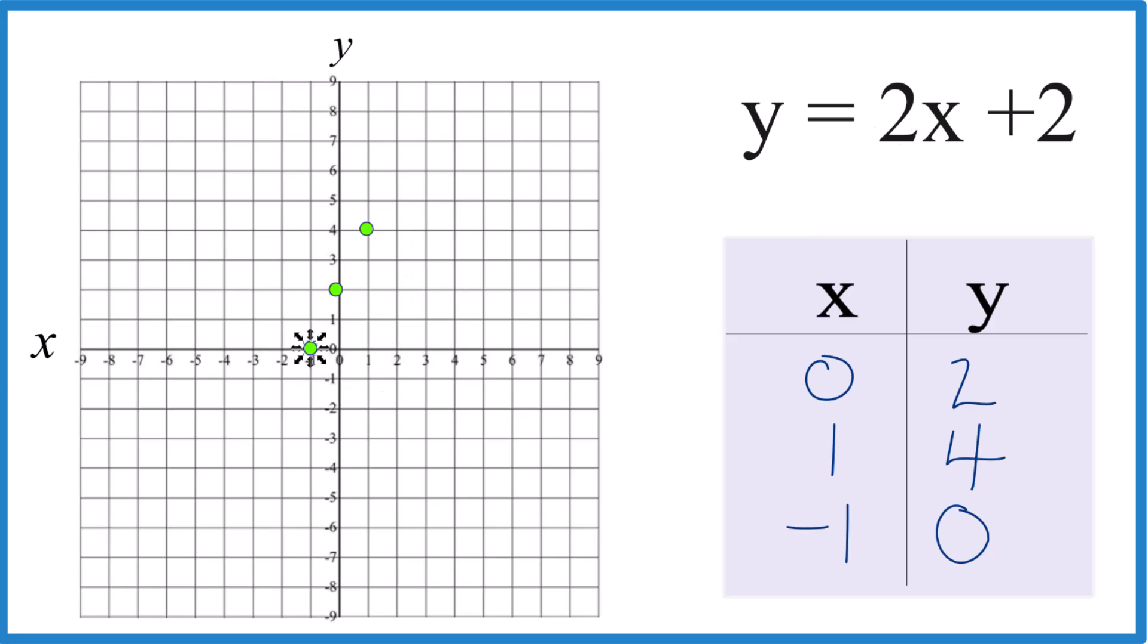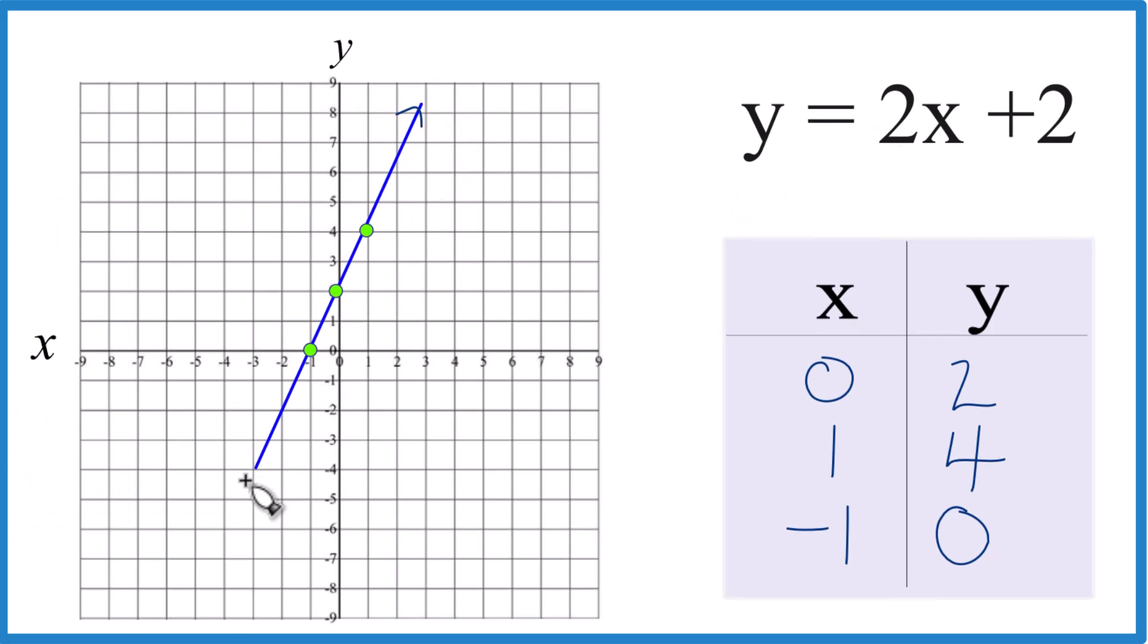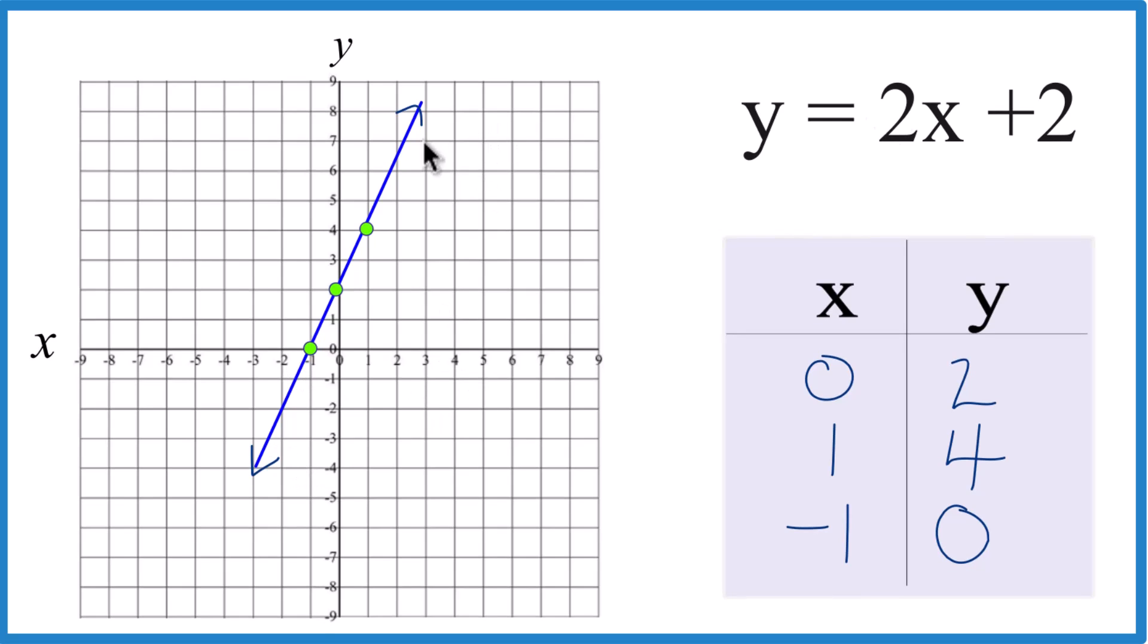And this is the graph for y equals 2x plus 2. Let's put a line through that. Then we can put arrows, show that it goes to infinity. And so that's our graph for y equals 2x plus 2. And you could put any value in for x. You get a value for y. When you graph it here, it'll be somewhere on our line.